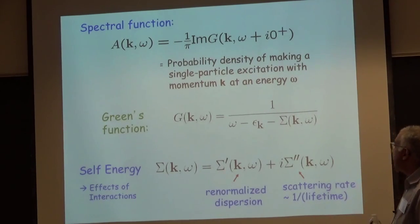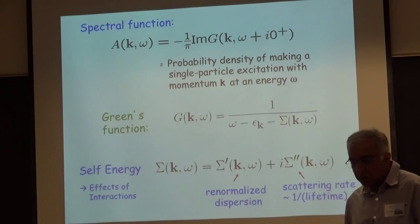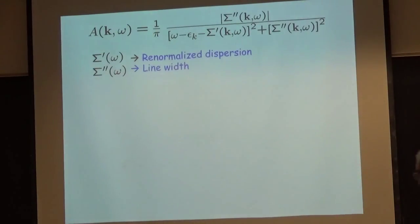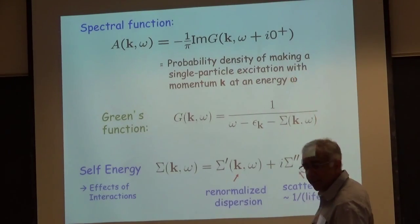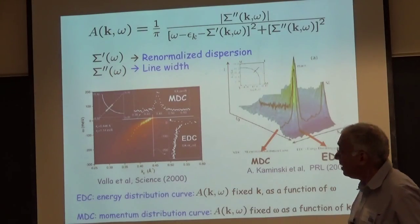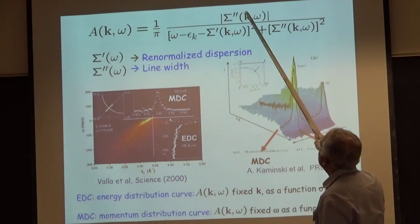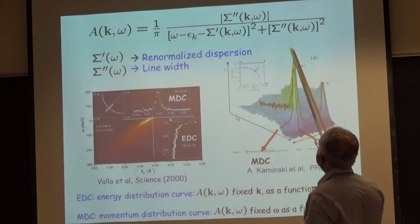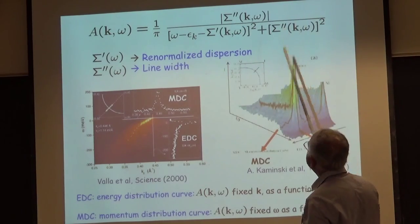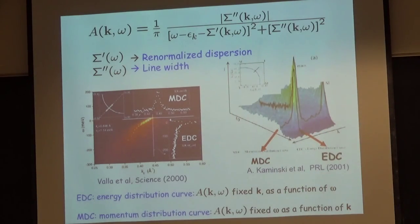The imaginary part of the self-energy is related to the scattering rate or the inverse lifetime of the state you are studying inside the material. If you take the formulas on the previous page, stick in sigma prime plus i·sigma double prime, and take its imaginary part, you find the following formula. You can see that this looks like, if you ignore all k and omega dependencies, it could look like a Lorentzian — with a width set by the imaginary part and a shift of the dispersion set by the real part. That's not a bad way of thinking about what the data are going to look like.